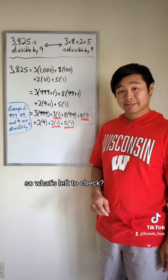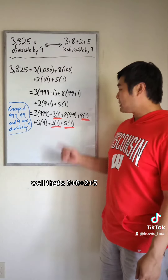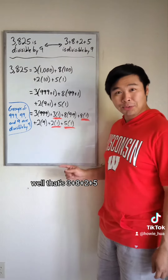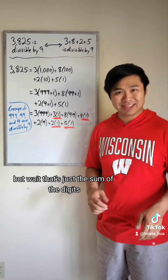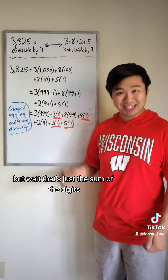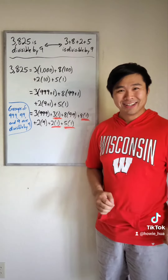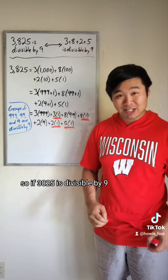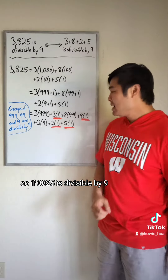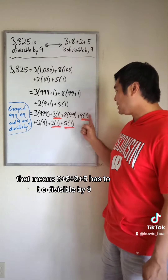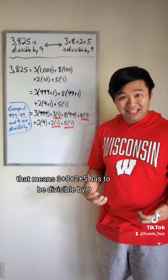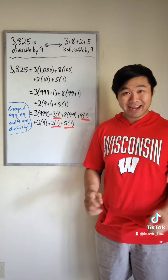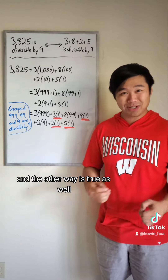So, what's left to check? Well, that's 3 plus 8 plus 2 plus 5. But wait, that's just the sum of the digits. So, if 3,825 is divisible by 9, that means 3 plus 8 plus 2 plus 5 has to be divisible by 9. And the other way is true as well.